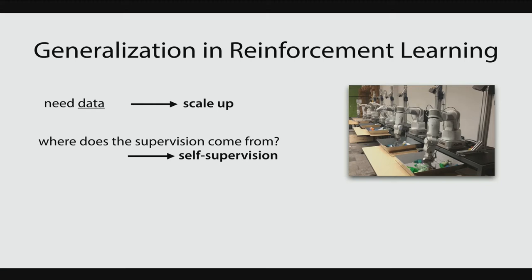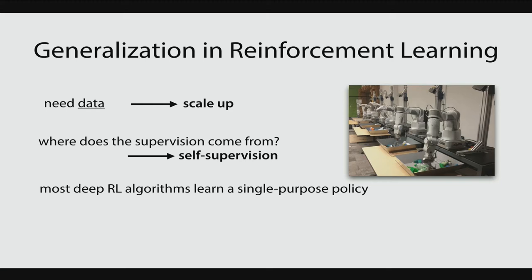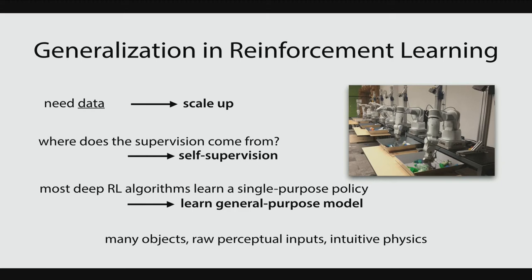Self-supervision is very related to unsupervised learning and sometimes goes under the name of predictive learning. Most deep reinforcement learning algorithms learn a single-purpose policy, which won't generalize well to new tasks. So instead of learning a policy, we're going to learn a general-purpose model that we can invert to get a policy for a particular goal. We also want to scale to many different objects, learn from raw perceptual inputs, and learn some notion of intuitive physics.